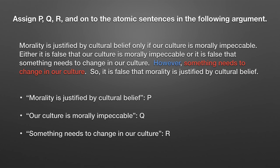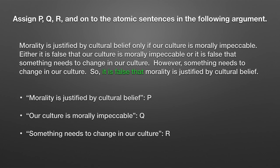The word 'so' indicates the conclusion. The atomic proposition 'morality is justified by cultural belief' was our first atomic proposition, so it's still assigned P. So rules one and two: use P, Q, and R for the atomic propositions, starting at P and working in succession up to Z. And if an atomic proposition gets a letter, use the same letter for all occurrences of it.